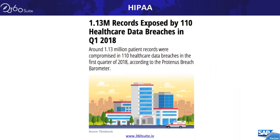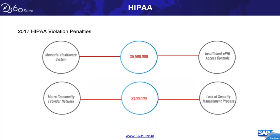Just in Q1 of 2018, 1.13 million records were exposed across 110 data breaches with healthcare records. The penalties for HIPAA violations are huge — a healthcare system received a $5.5 million violation due to insufficient access controls, and another provider had a $400,000 violation for not having a security management process in place. These are just a few examples; it's very important to have the right security in place when handling healthcare records and patient information.